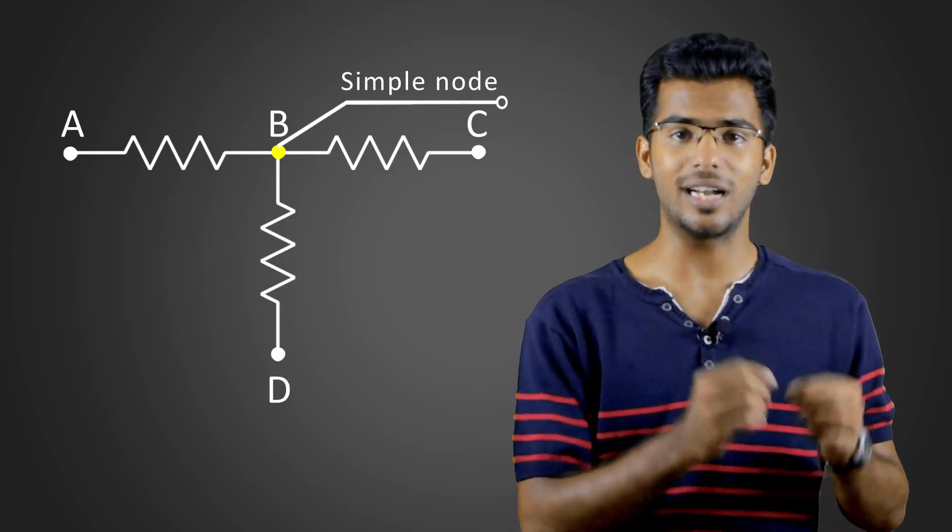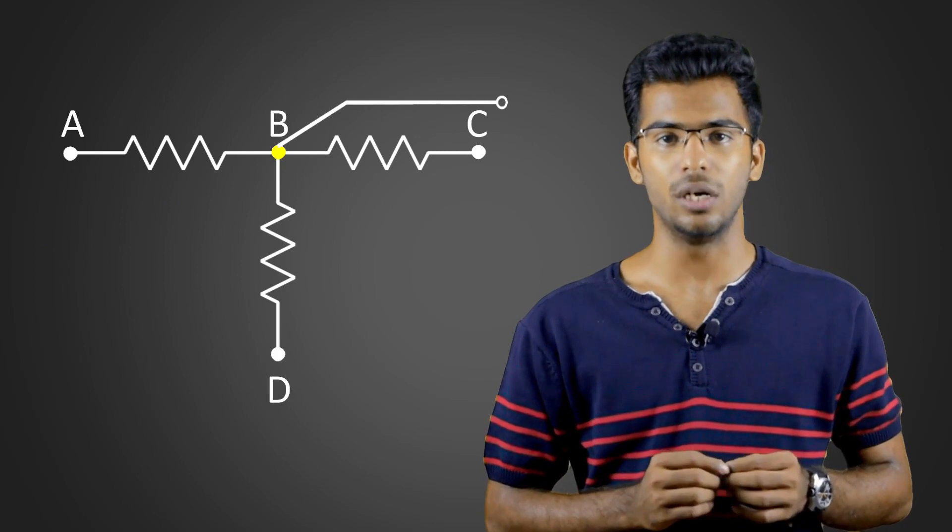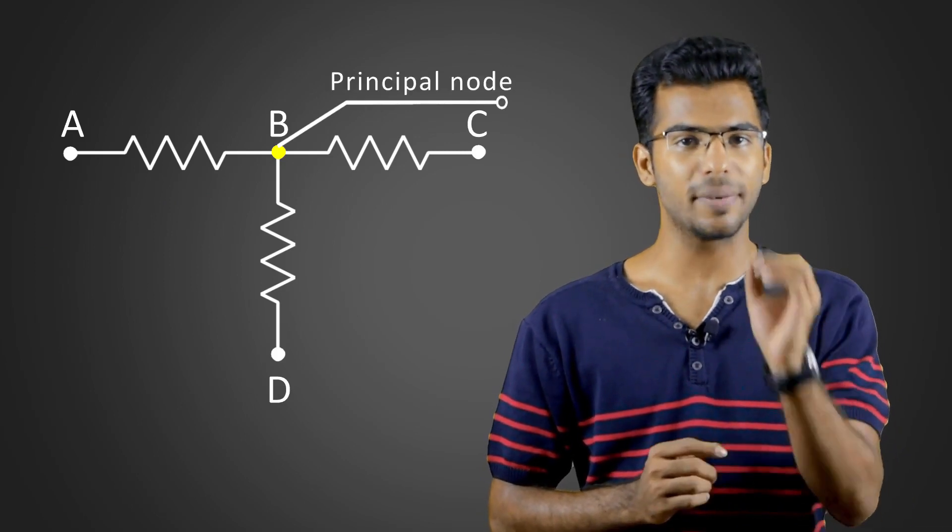If three or more branches are connected then it is called a principal node or principal junction.